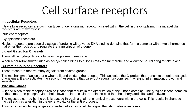Finally, let's look at cell surface receptors. Intracellular receptors are common types of cell signaling receptors located within the cell cytoplasm, and are of two types: nuclear or cytoplasmic. Nuclear receptors are special classes of proteins with diverse DNA binding domains that form a complex with thyroid hormones and either enter the nucleus and regulate the transcription of a gene. Ligand-gated ion channels permit hydrophilic ions to pass the plasma membrane. When a neurotransmitter such as acetylcholine binds to it, ions cross the membrane and allow nerve firing to take place.